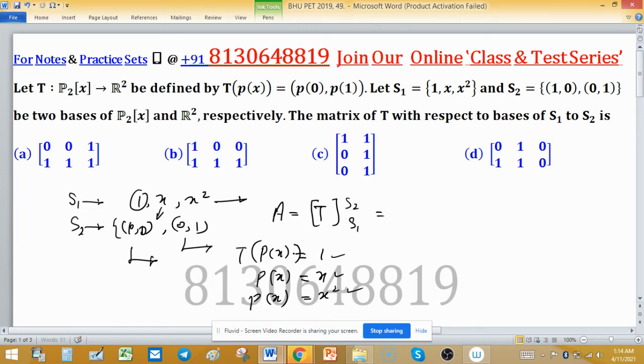After applying T on these, T will send the image of P as (P(0), P(1)). Because this is a constant polynomial, P(0) and P(1) are the same, so P(0) is also P(0) and P(1) are both the same. This is an ordered pair. Write this image with the help of the basis of the codomain.